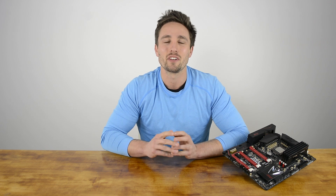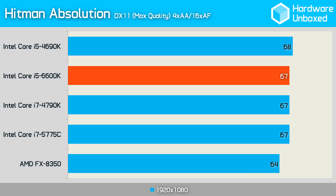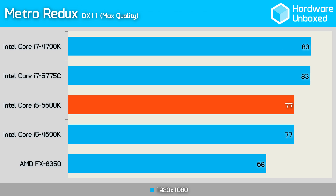Next, we paired the 6600K with a GeForce GTX 980 and tested some games on max quality settings. First up was Bioshock Infinite — all Intel generations tested received virtually the same score, well within the margin of error, at between 113 and 115 frames per second. Hitman Absolution told the same tale, with all Intel processors scoring either 67 or 68 frames per second. Our third and final title was Metro Redux, where we saw some separation between the Core i5s and Core i7s.